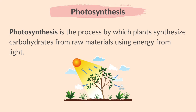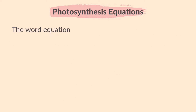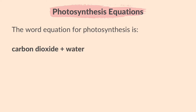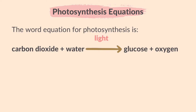Photosynthesis is the process by which plants synthesize carbohydrates from raw materials using energy from light. The word equation for photosynthesis is carbon dioxide and water giving glucose and oxygen in the presence of light and chlorophyll.